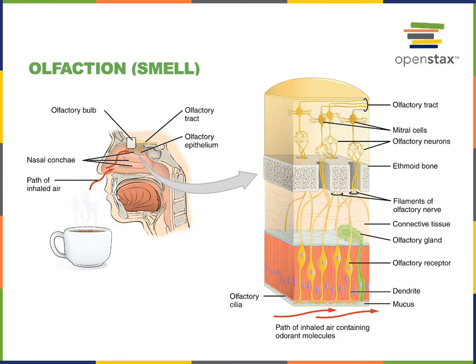Olfaction is one of the functions that the respiratory system contributes to. The respiratory system draws air in through the nasal cavity, and molecules in the air can dissolve in the mucus of the olfactory epithelium and bind to the olfactory receptors, which relay information through cranial nerve one into the olfactory bulbs and olfactory tracts, carrying the information into the olfactory cortex in the temporal lobe where the sense of smell is processed.